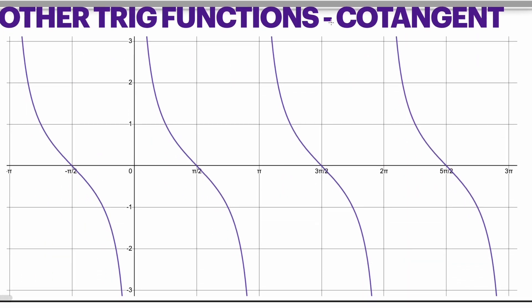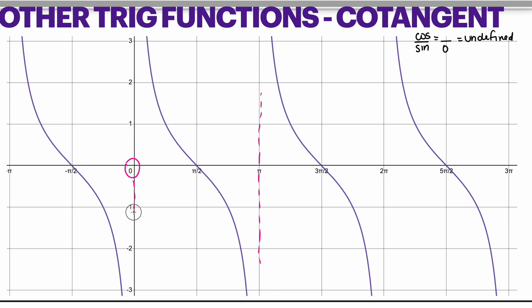Cotangent would be the opposite because cotangent is cosine over sine. So wherever sine is 0, it is going to make it undefined. So cotangent is going to have asymptotes at π and at 0 and at 2π. That is where you would have asymptotes for the cotangent function.